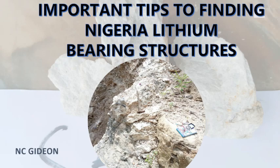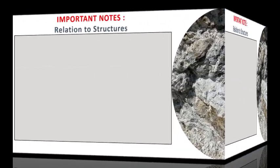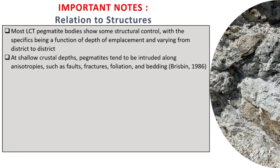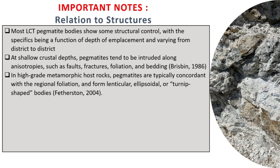Please always remember to subscribe, like, and share our videos — your encouragement keeps us going. Before we proceed, note this relation to structure: most LCT pegmatite bodies show structural control, which is why we use structures first before anything else. Secondly, at shallow crustal depth, pegmatites tend to be intruded along anisotropic features such as faults, fractures, foliations, and also bedding.